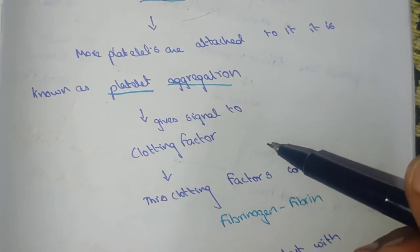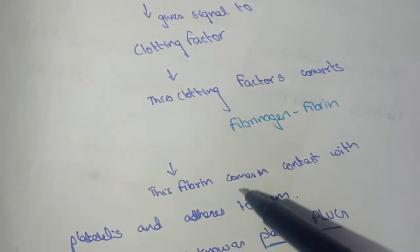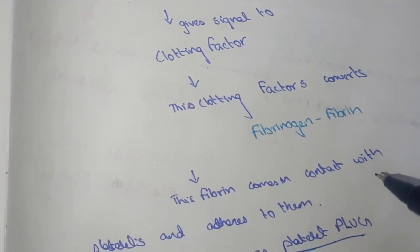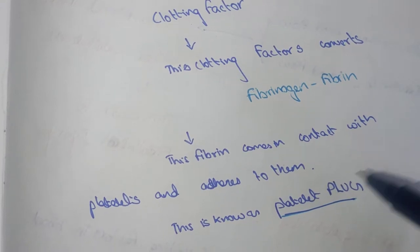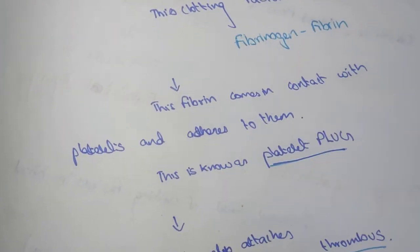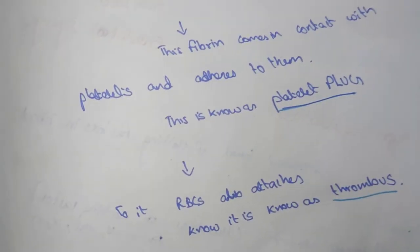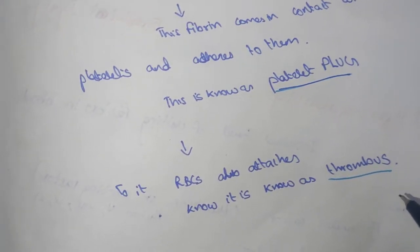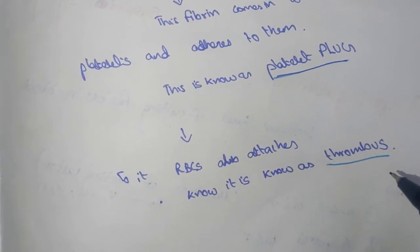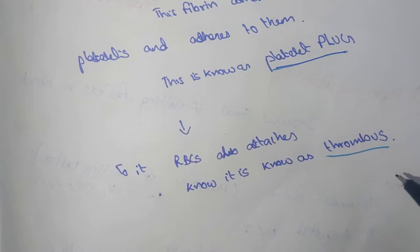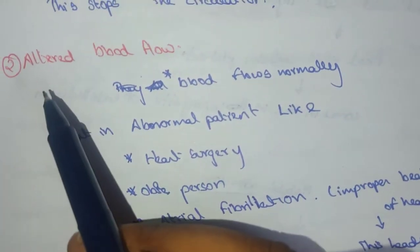The clotting factors are produced and convert fibrinogen to fibrin. This fibrin comes in contact with the platelets, adheres to them, and ties them together, forming a platelet plug. Red blood cells then attach to this, and it is now known as a thrombus — a mass of blood clot formed within the intact blood vessel, which stops circulation.